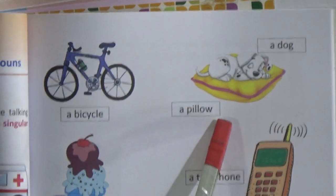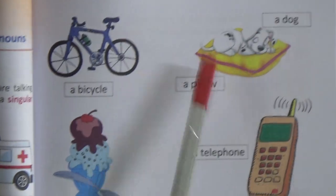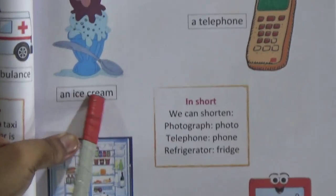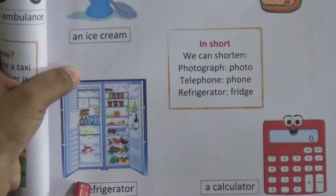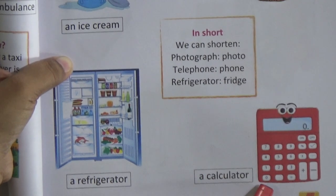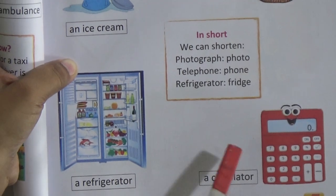A bicycle, a pillow, a dog, an ice cream, a telephone, a refrigerator, a calculator — that means here only one thing is indicated and this is called the singular number.